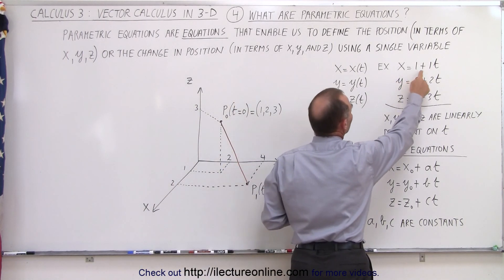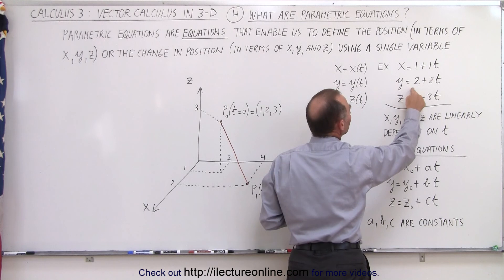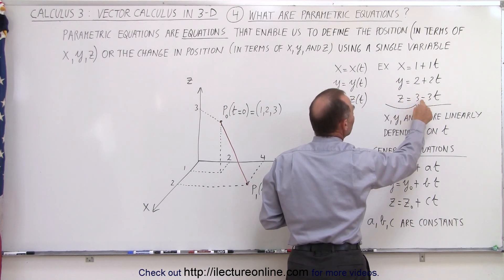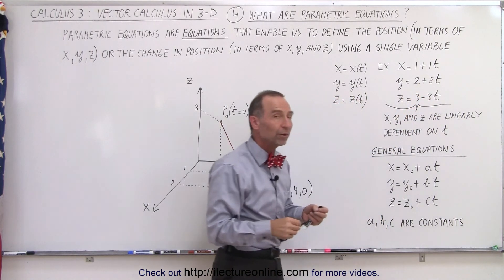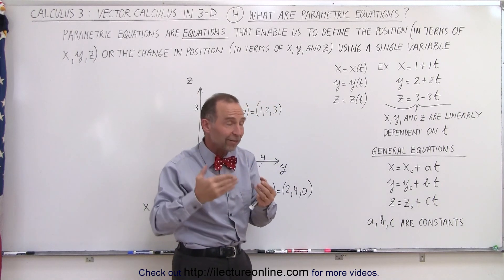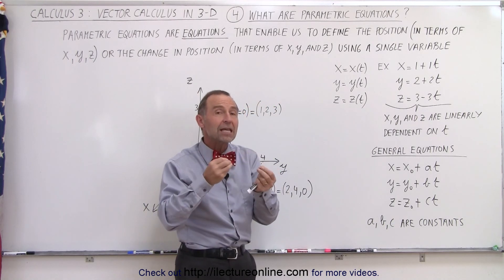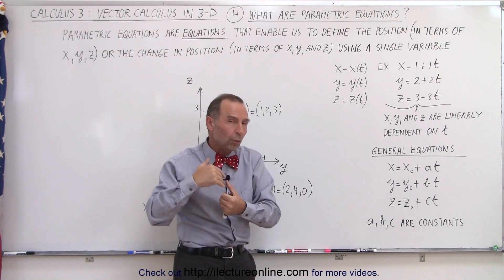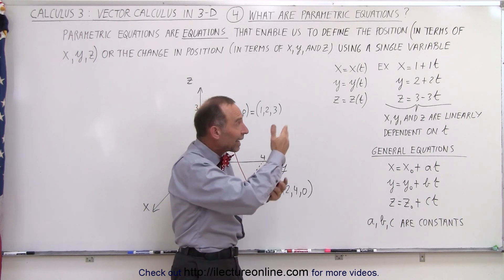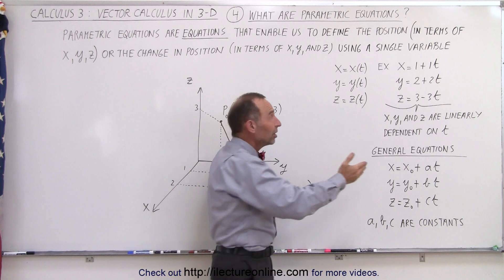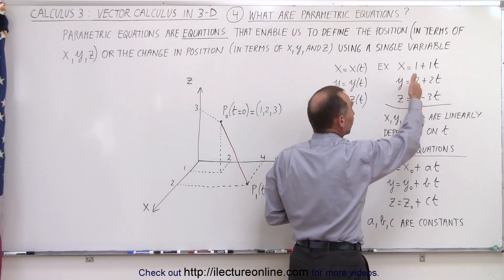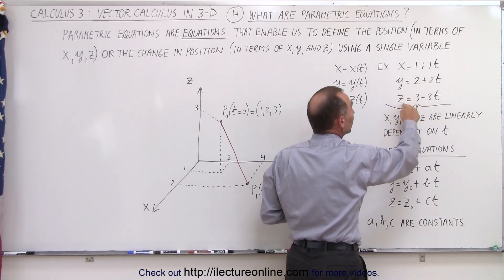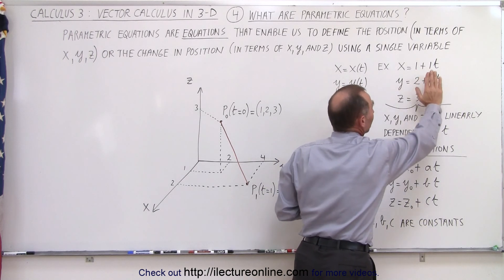Here we have some simple examples. Let's say that x is equal to 1 plus 1t, y is equal to 2 plus 2t, and z is equal to 3 minus 3t. This means we've defined our three variables x, y, and z in terms of t, and how x, y, and z will change when t changes. You can see that when t is equal to 0, x is equal to 1, y is equal to 2, and z is equal to 3.